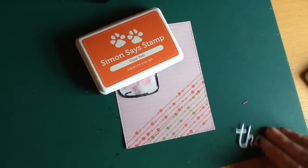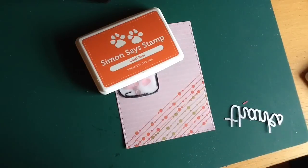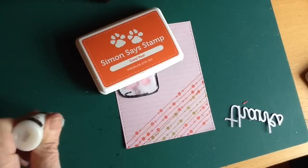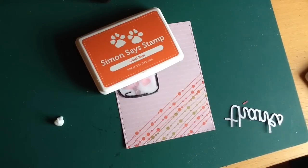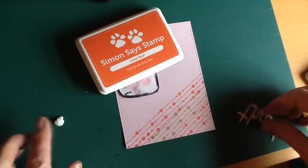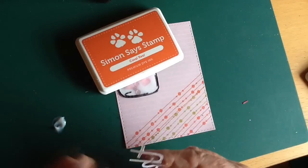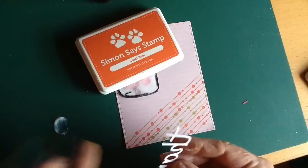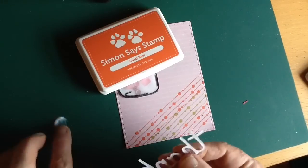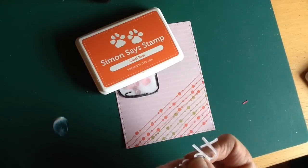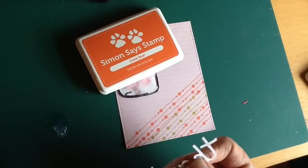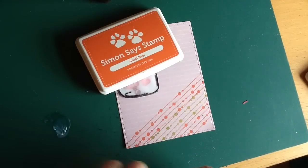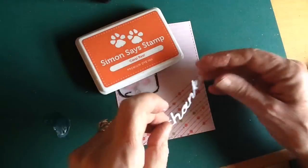I'm just going to pop an ink pad on top of it so that it has some weight on it while it dries. And another little blob of multi-medium, and I'm using my fingers to apply that. It dries matte so it doesn't show even if you do spread a little bit about.